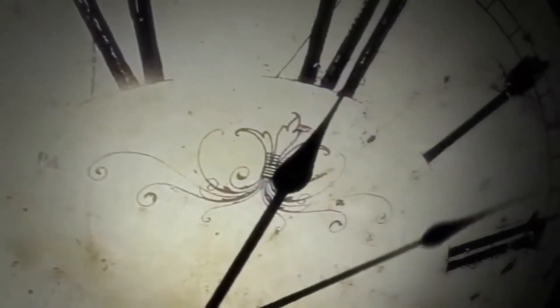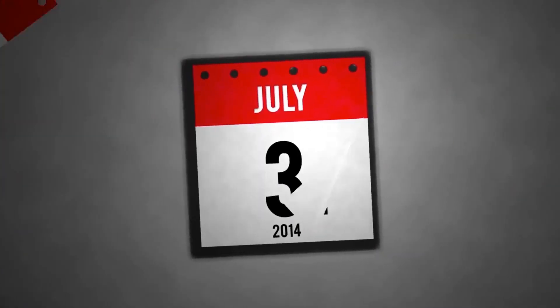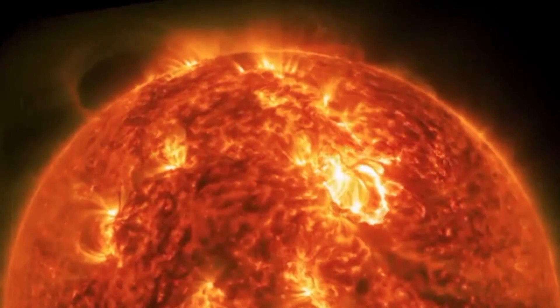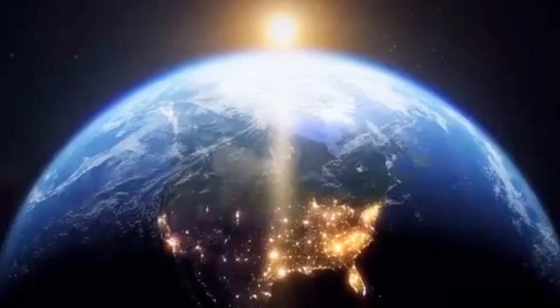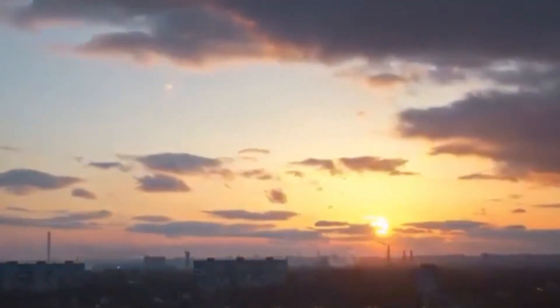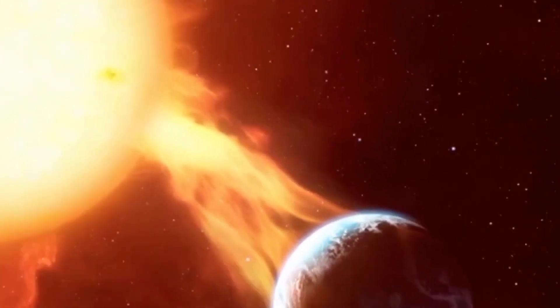Each solar cycle lasts about 11 years on average, and the maximum is usually observed in the middle of it. These peak events can vary in their intensity, from extremely powerful, as expected in 2025, to less pronounced, as it was in the cycle that ended in 2021. The final intensity of the solar maximum expected in 2025 will determine how serious the consequences will be for Earth.